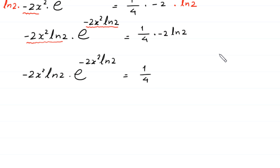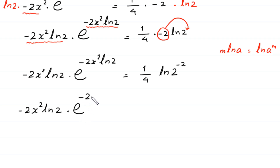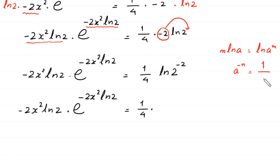According to the natural log property, m times ln of a equals ln of a to the power m. The power negative 2 will become the power of this 2, giving us ln of 2 to the power negative 2. Using the exponent property 1 over a^n equals a^(negative n), we can write ln of 2 to the power negative 2.